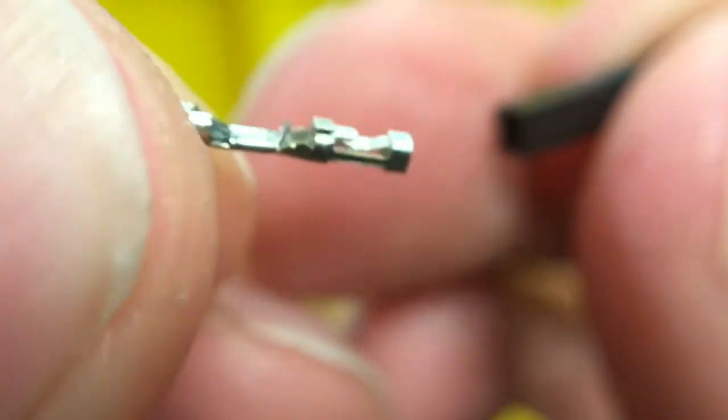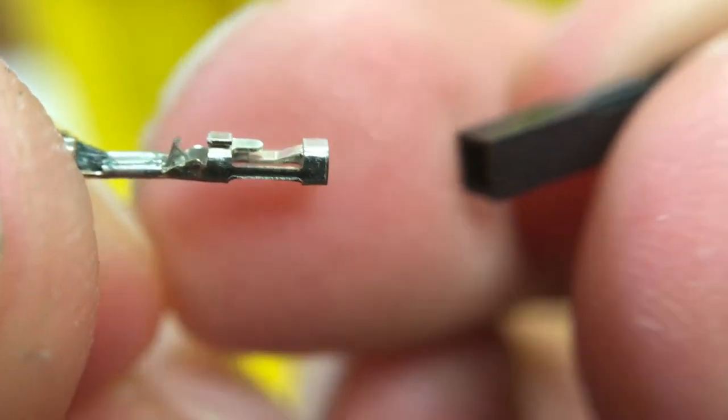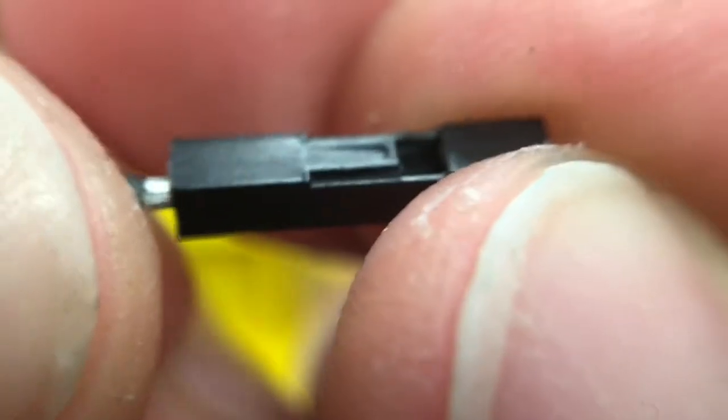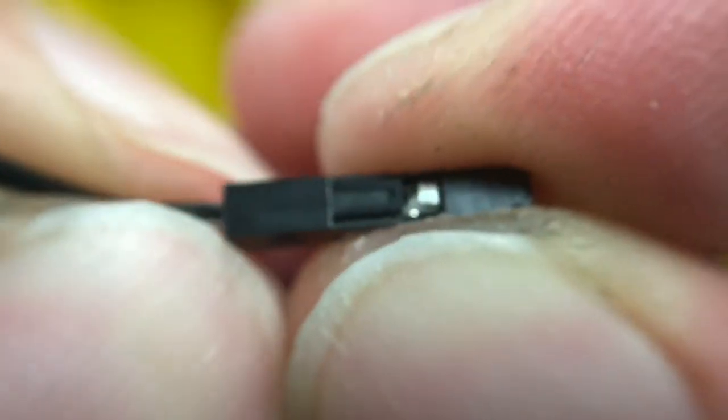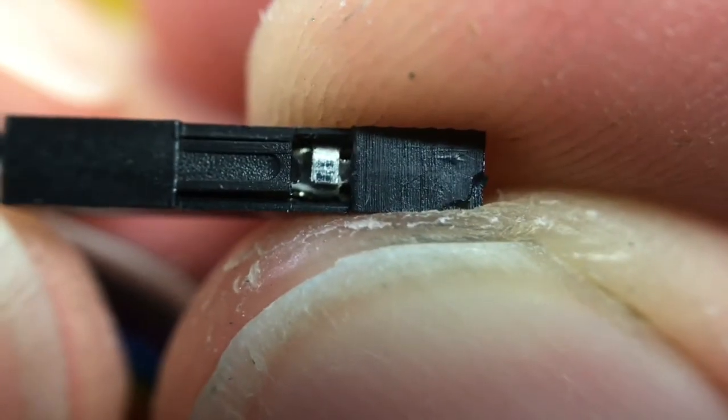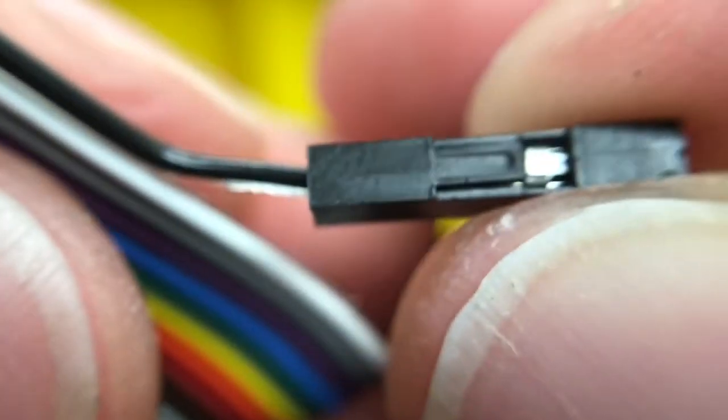And the top of this little nub at the top hangs on to the tab. So you slide that in and you make sure you hear that click. And then when you pull it, that gets hung up so it's locked in. You can't back out.